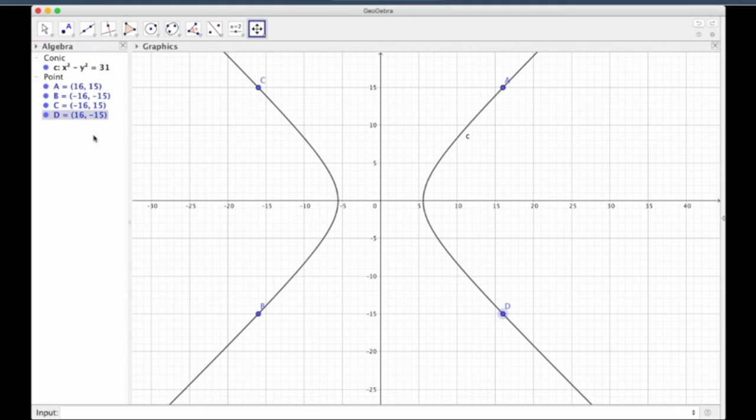So see, I have written the coordinates of those points here. So only these four points, a, b, c, d, only these four points will have both coordinates as integers. And no other point on this hyperbola will have that property, that both the coordinates are integers. So this is a very interesting geometric interpretation of the algebraic problem that we just solved.